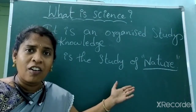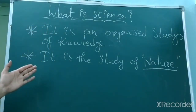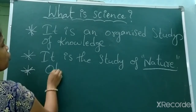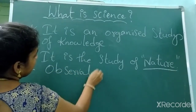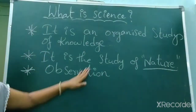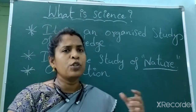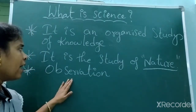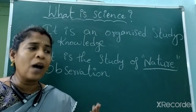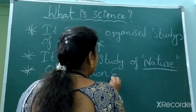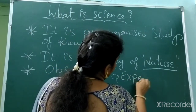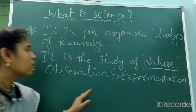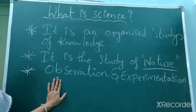So how will we study about this nature? By observation. Science is also observation. If you need to know something, then you must observe your surrounding conditions. And after observation, what you have learned from it — that you need to go with experimentation. So science is observation as well as experimentation.